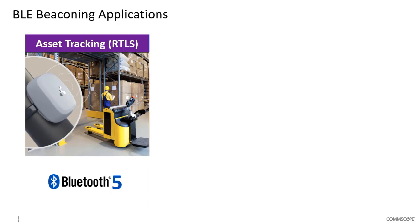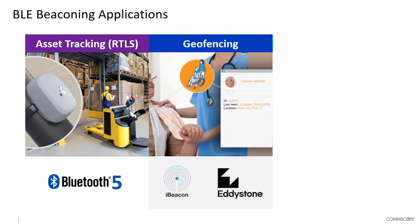By using approximate distance and the known location of hubs within the building, you can determine that a device is in approximately a specific location. At higher densities of devices, you can also perform trilateration or triangulation to get a much closer, more accurate position of a device within a building for real-time location services.